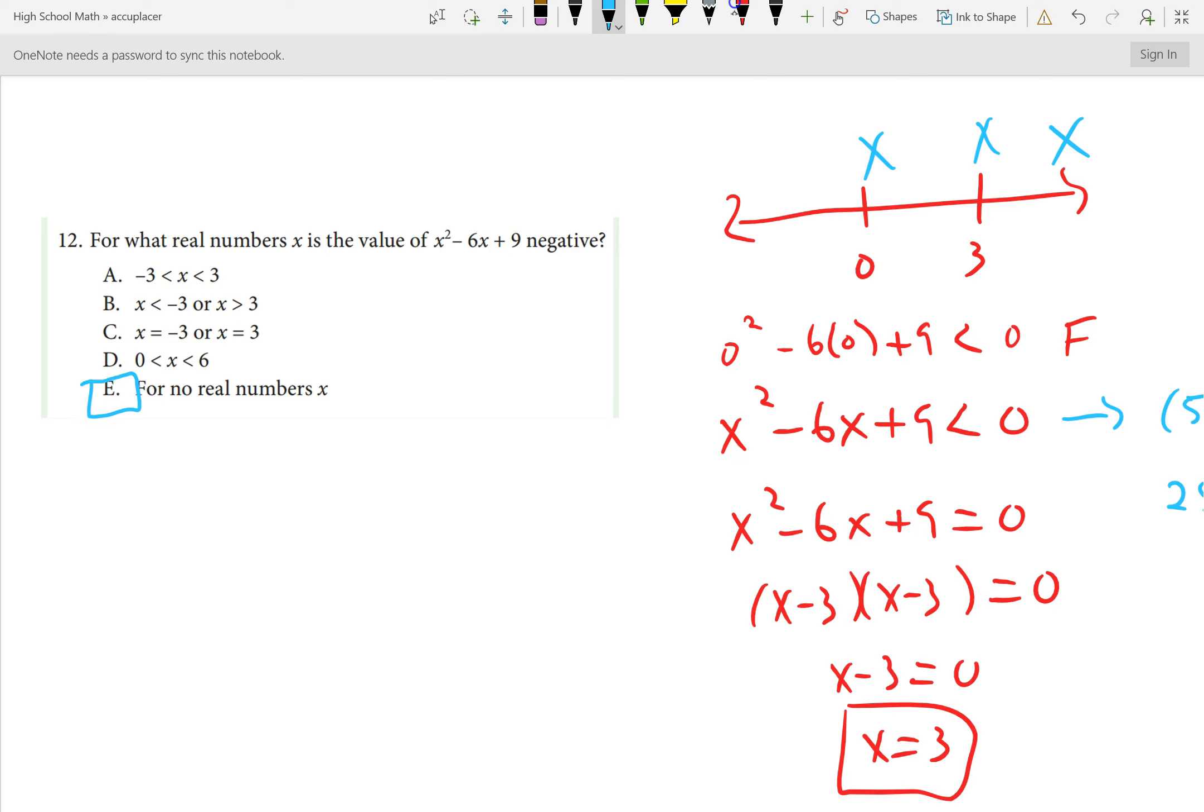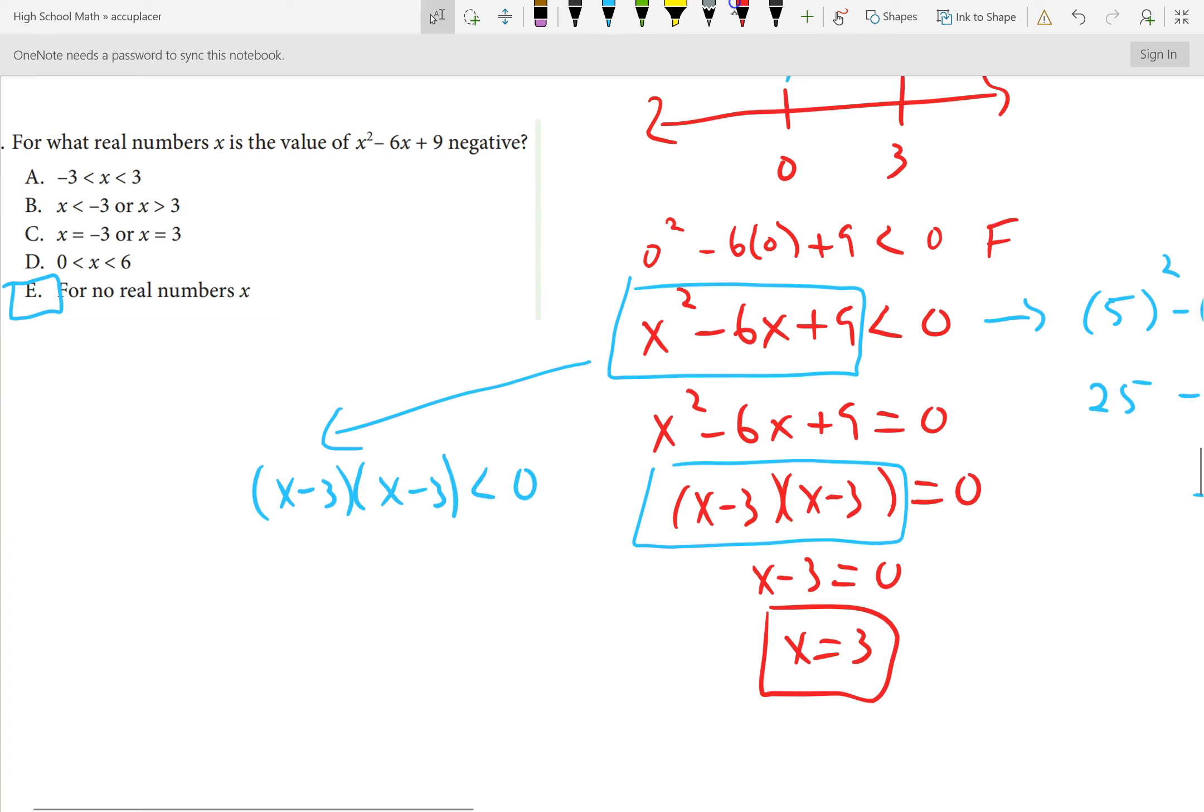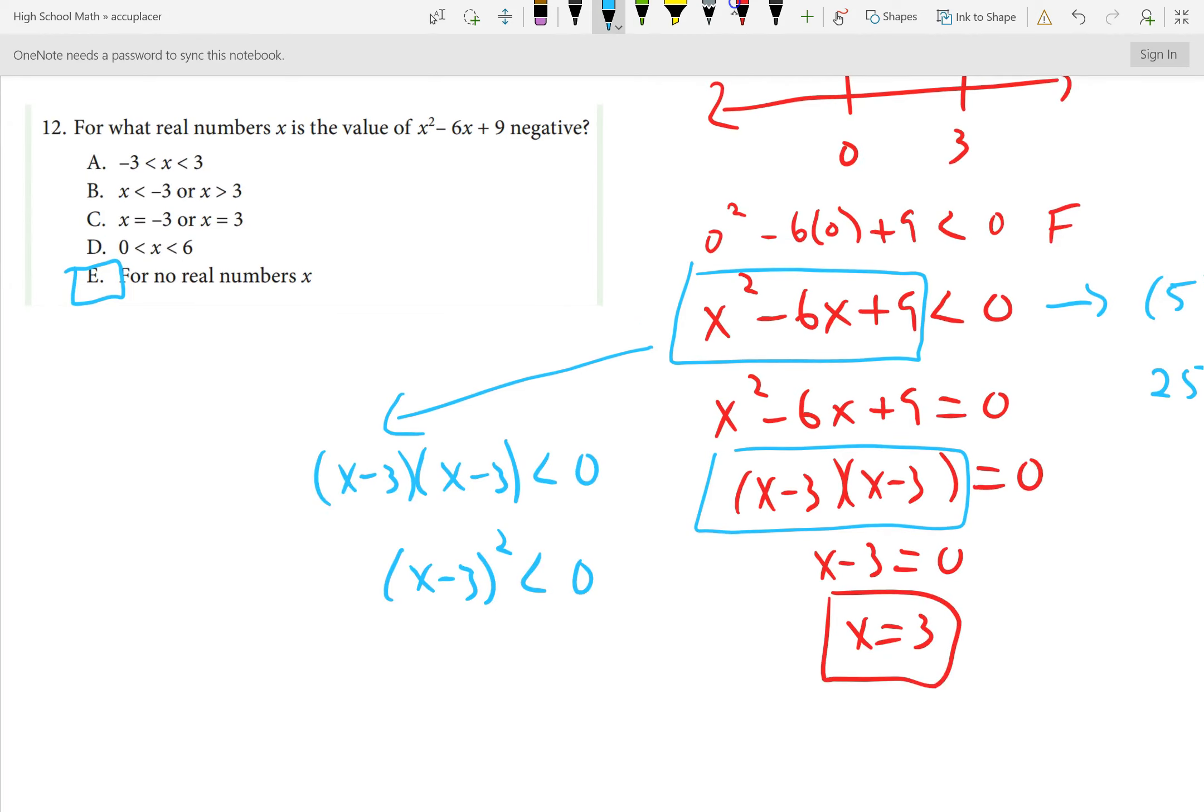So, over to the left, no good. To the right, no good. And it can't be exactly 3 because if we did exactly 3, we know it's going to yield 0, and 0 is not less than 0. So, in fact, there are no numbers for which this expression will be negative. We're saying x minus 3 squared is less than 0. We're saying something squared is less than 0. That won't ever happen for the real numbers. Any real number squared will be at least 0. So, there are no reals. No reals satisfy this statement.